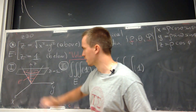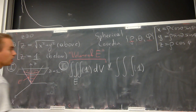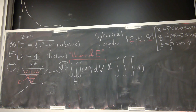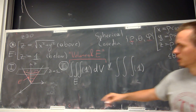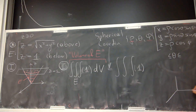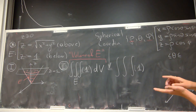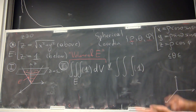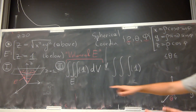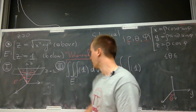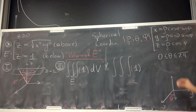Let's describe the region using spherical coordinates. The easiest bound: θ measures the rotation around the z-axis. If you imagine a vector in the xy-plane, θ measures how far you go from the positive x-axis. To describe the whole region, θ needs to change from 0 to 2π.